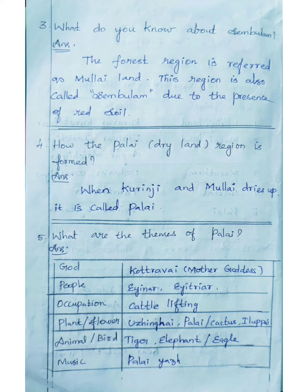Fifth question: what are the themes of Palai? God: Kottravai, Mother Goddess. People: ayayar, aychiyar. Occupation: cattle lifting. Plant: ullingai, Palai. Flower: cactus, ilupai. Animal: tiger, elephant. Bird: eagle. Music: Palai.